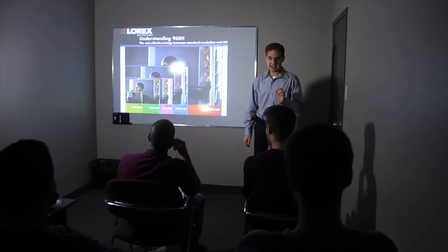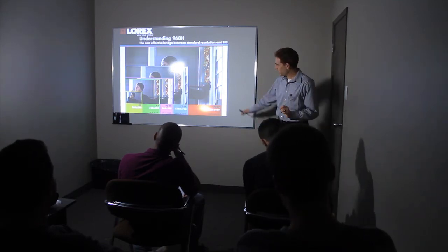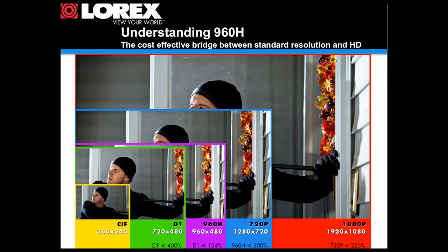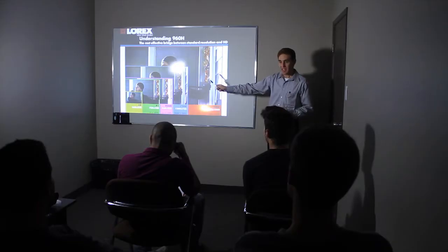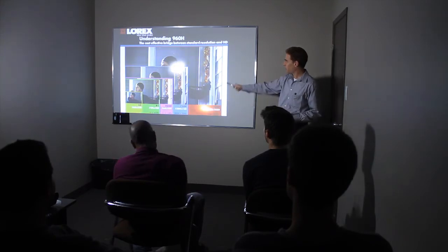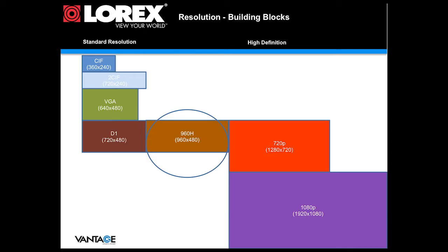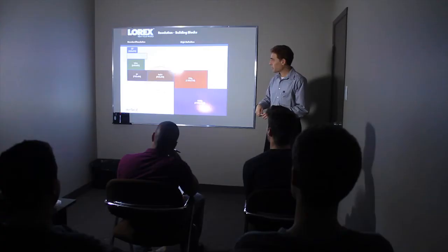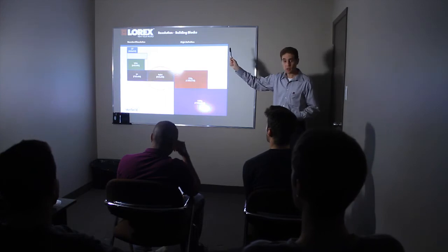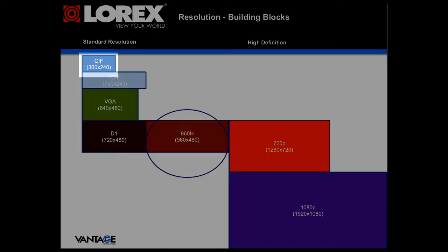This is the bridge between standard resolution and high definition. In this picture here you can see the same person as recorded in different resolutions. You can see the size from the lowest resolution SIF until full HD. So what are the building blocks of resolution? Resolution is measured by pixels — horizontal pixels multiplied by vertical pixels. On the left hand side you can see standard resolutions, the lowest being SIF progressing to D1 at the bottom left.